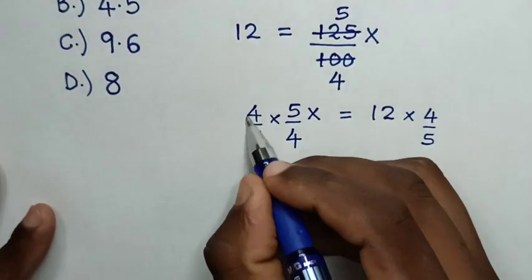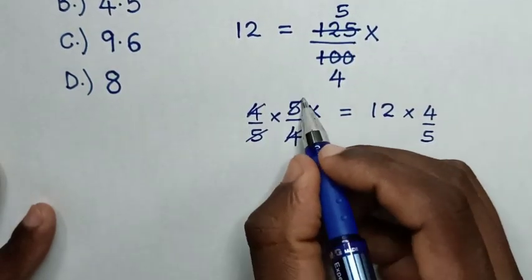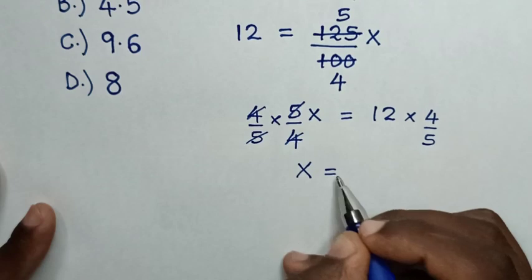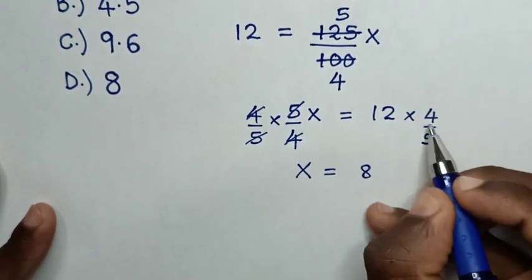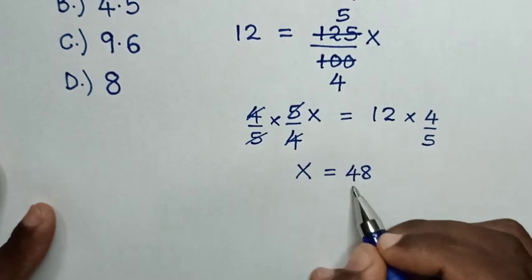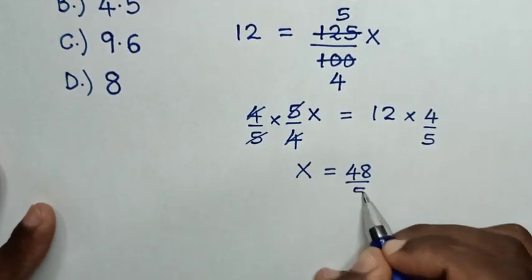So, this and this will cancel, this and this will cancel, so it will be x is equal to this times this. 4 times 2 is 8, 4 times 1 is 4, then over 5.